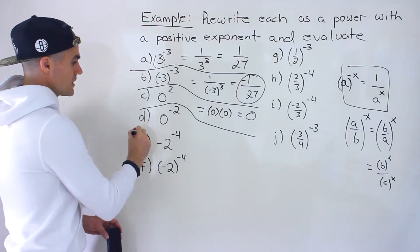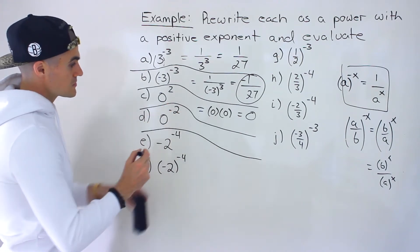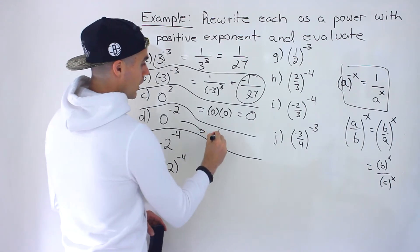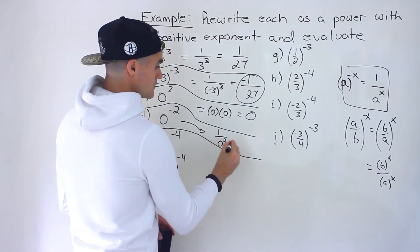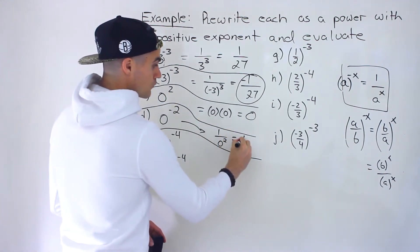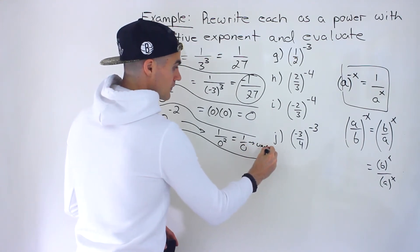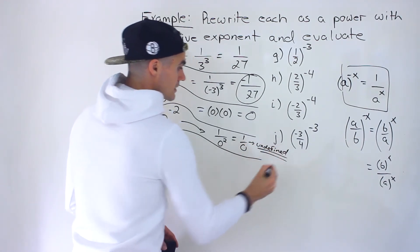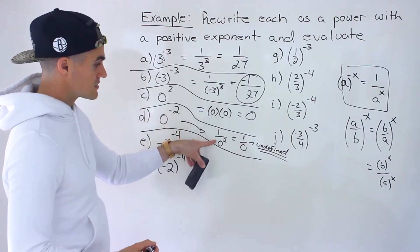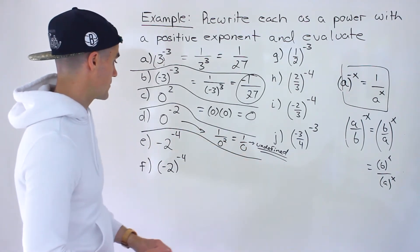Be careful with this one: 0 to the negative 2. It has a negative exponent, so applying the rule we get 1 over 0 to the power of positive 2. But 0 to the power of 2 is 0, giving us 1 over 0, which is undefined — you can't divide anything by 0. So rewriting it with a positive exponent gives 1 over 0 to the power of 2, but you can't evaluate it; it's an undefined expression.